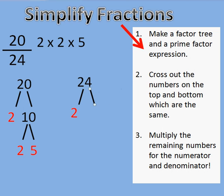So 2 times 12 is 24. Now, the reason why this 12 is still black is because 12 isn't a prime number. I can still break that down into other numbers. So 12 can become 2 times 6.